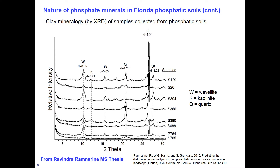I know this is not a clay mineralogy lecture, but I couldn't resist including some clay mineralogical data. These are stacked X-ray diffraction patterns for samples collected at various locations in Alachua County, Florida, by then Master's student Rubenda Ramnerine, now Dr. Ramnerine. What it shows is just how ubiquitous the mineral wavellite — aluminum phosphate — is where you have highly weathered soils forming in phosphate-rich geologic material. The W designation labels peaks attributable to wavellite; kaolinite and quartz are also labeled.